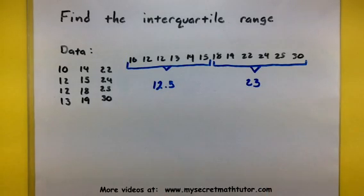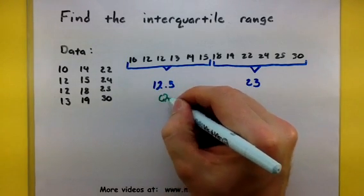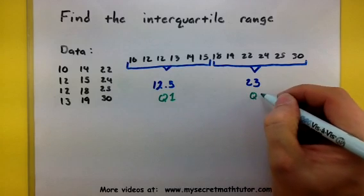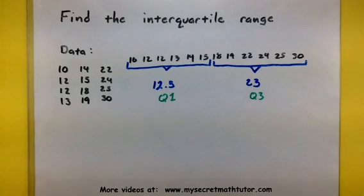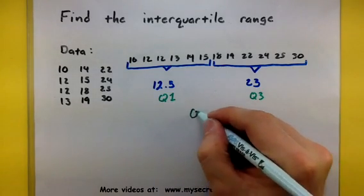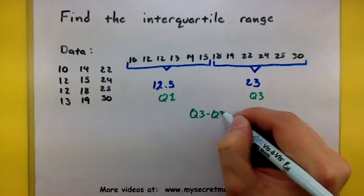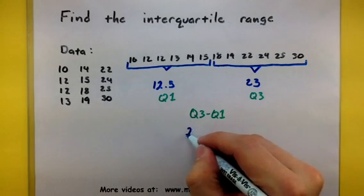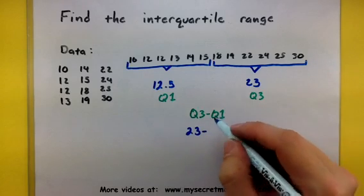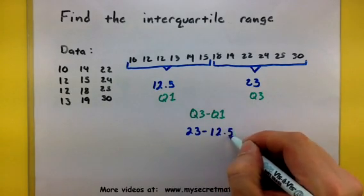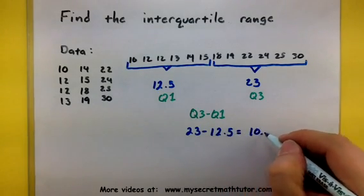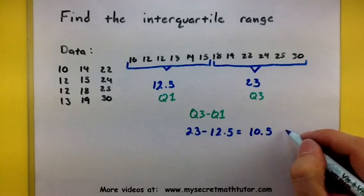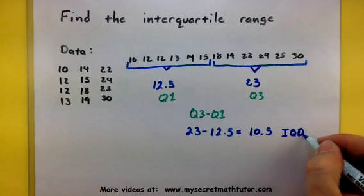Now some books like to call this Q1 and Q3. That's okay. We'd find the range by basically taking Q3 and subtracting Q1. So in our example, we're going to take our 23 and subtract from it 12 and a half. This will give us our answer of 10 and a half, and that's the interquartile range.